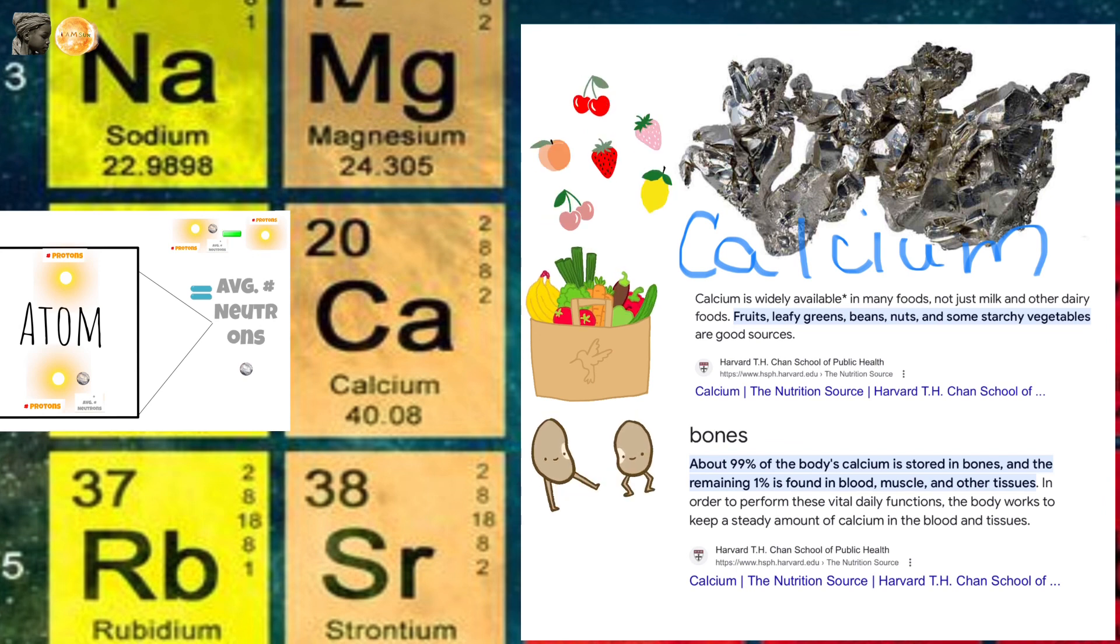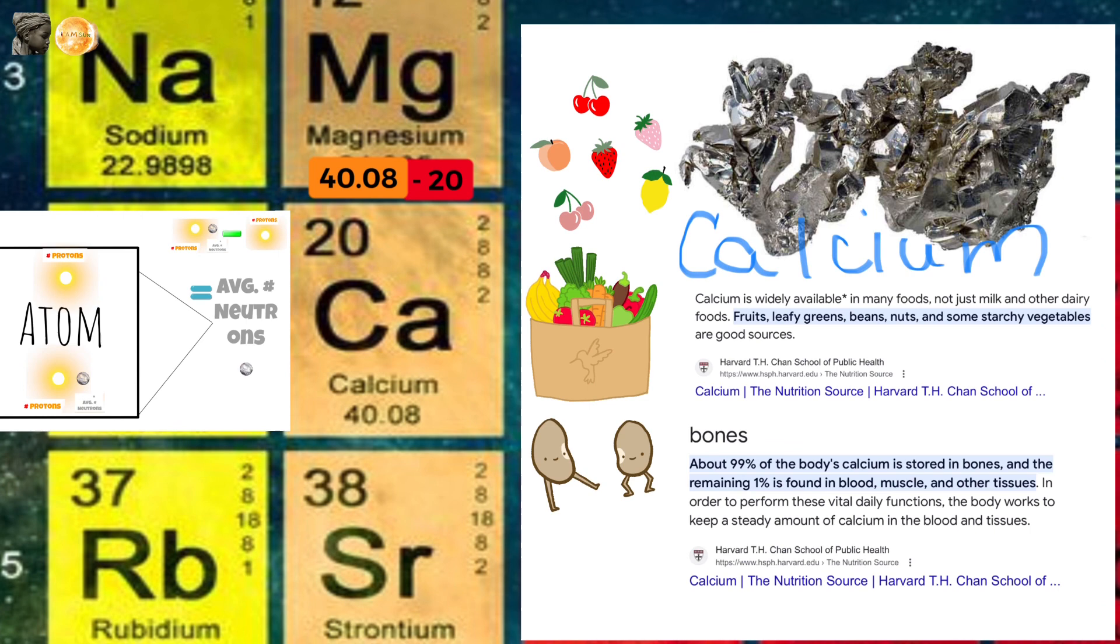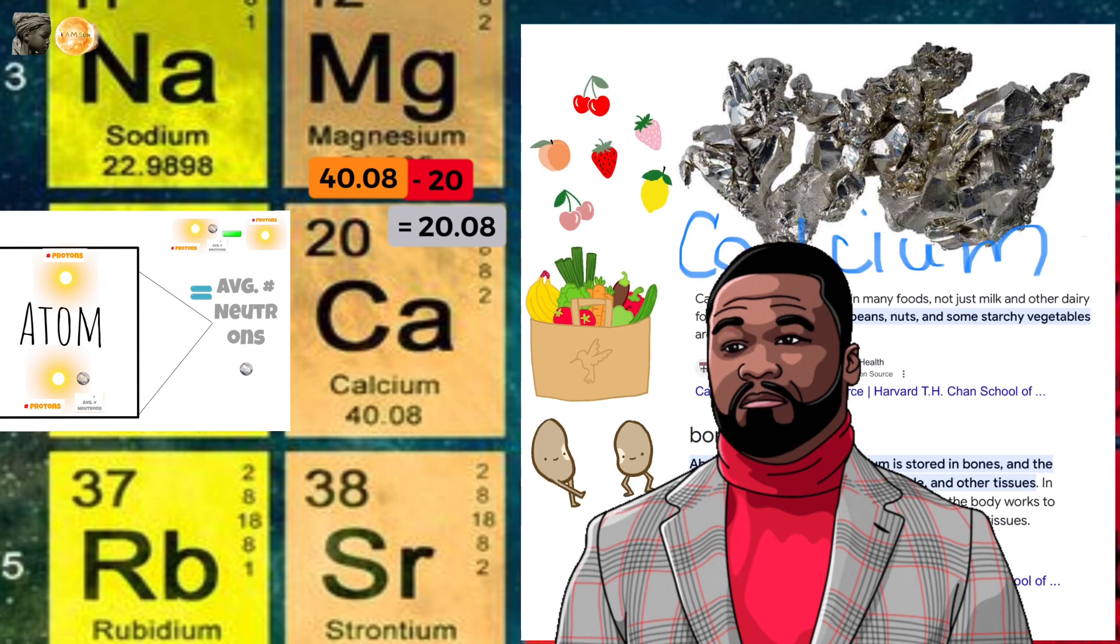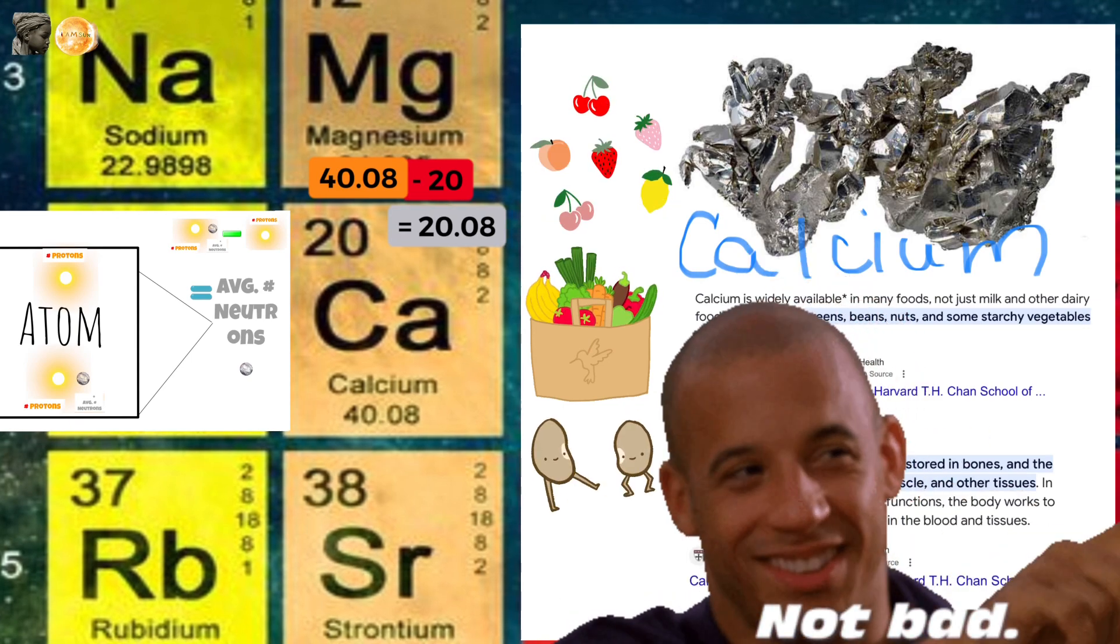So to find the average number of neutrons in the calcium atom, we subtract 20 from 40.08, which is 20.08 neutrons, about equal to the number of protons in a calcium atom. Okay, calcium, pretty balanced.